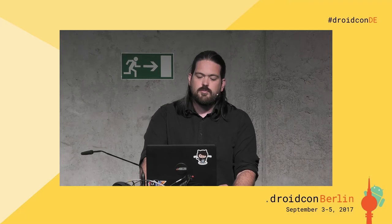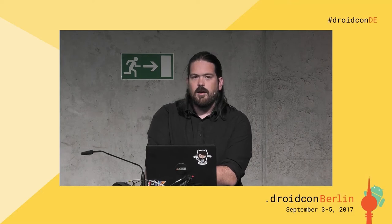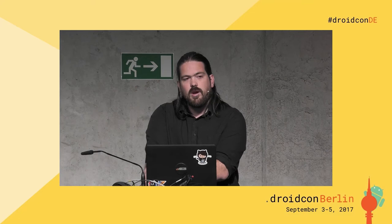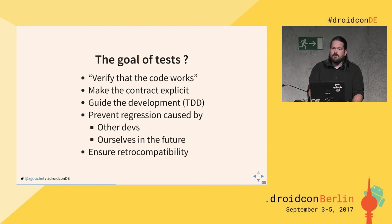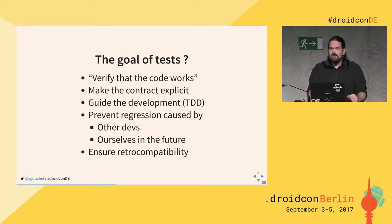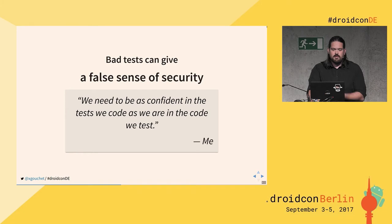Tests are also useful to prevent regressions caused by other developers or yourself in the future, and to ensure retro-compatibility — for example, when you change a parser or add a new format, you need to stay compatible with old formats. It's mostly these last points that we're interested in with mutation testing: ensuring that tests actually catch regression or retro-compatibility issues. Bad tests can give you a false sense of security, and you need to be as confident in the tests you write as you are in the code you test.